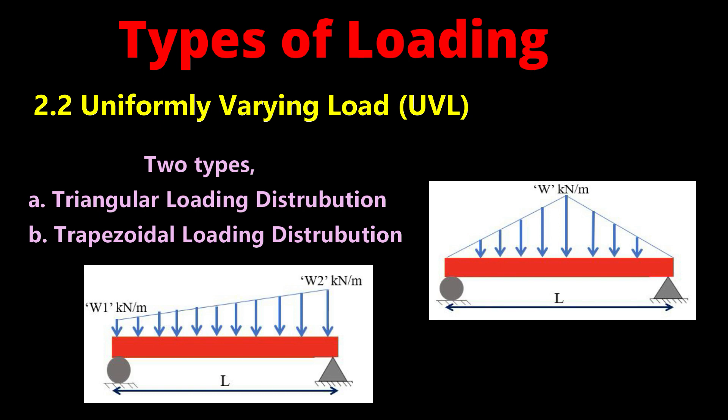You can refer to the figures shown. If the intensity of load is zero at one end or both ends, it is called triangular loading distribution. If both ends have some intensity of load and vary uniformly, it is called trapezoidal loading distribution.